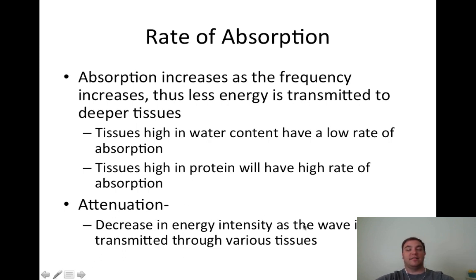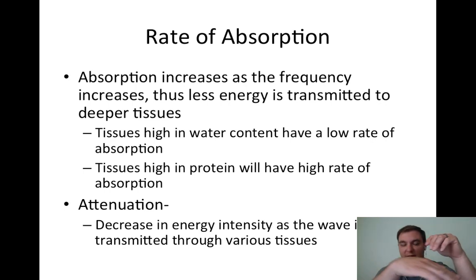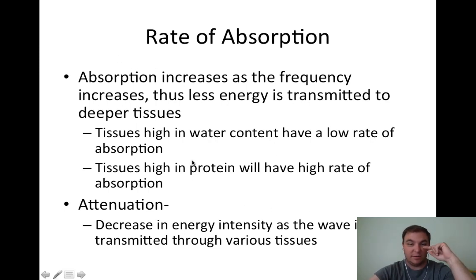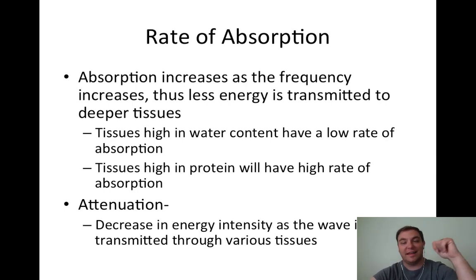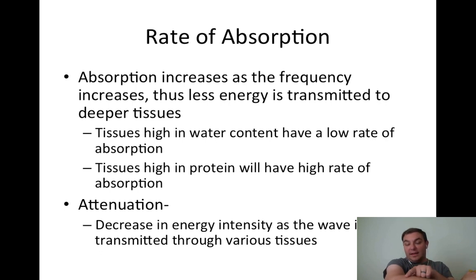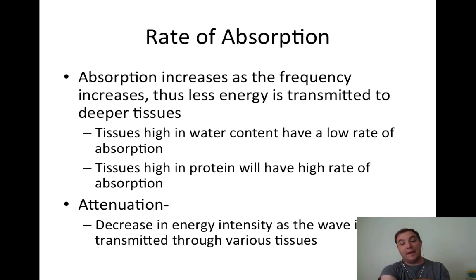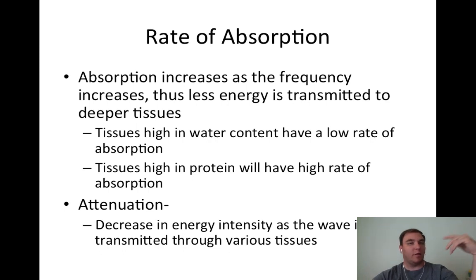Attenuation is the decrease in energy intensity as the wave is transmitted through various tissues. For example, treating the wrist extensors at the elbow: you have skin, fascia, muscle, then bone. By the time the sound wave reaches the deepest muscle belly, attenuation has occurred - maybe only three out of a hundred sound waves are reaching that muscle belly. This is very similar to the Law of Grotthus-Draper.